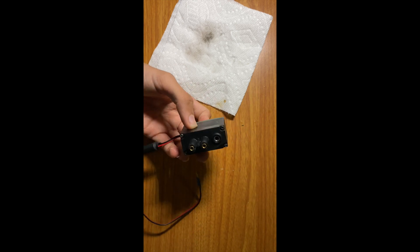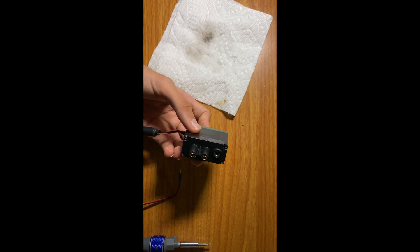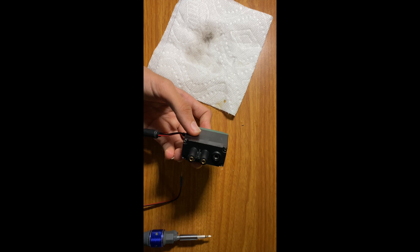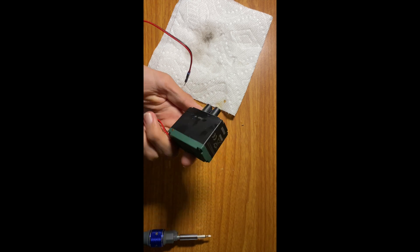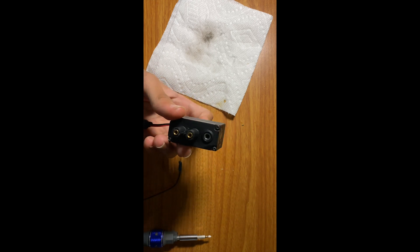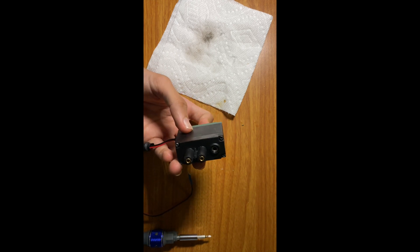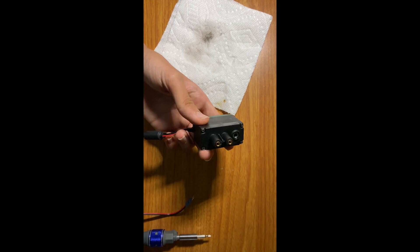And that's it. Obviously with the new V5 smart motors, it's a lot easier to replace the gear cartridges, but if you have an old 393 motor lying around, this is how you replace the cartridges. Thank you so much for watching.